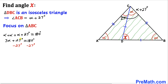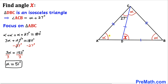Subtracting 27 degrees from both sides gives us 3 alpha equals 153 degrees. Dividing both sides by 3, our angle alpha turns out to be 51 degrees. So all three alpha angles are each 51 degrees.